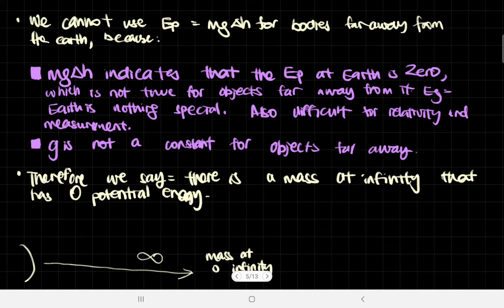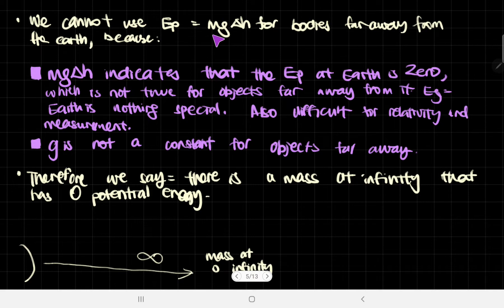Today I want to talk about the gravitational potential energy, or just gravitational potential, at the A-level physics level. So until now we've learned about the gravitational potential energy as MGH — that's what we have been told.